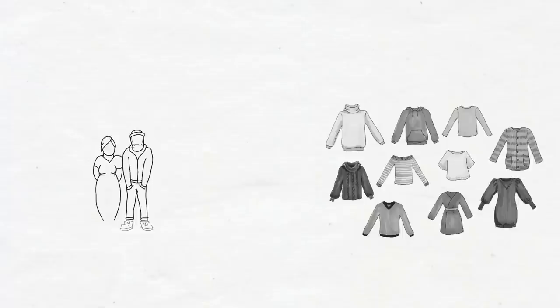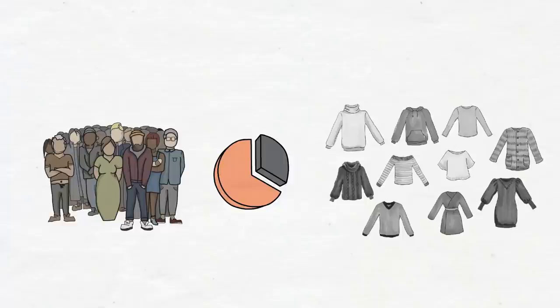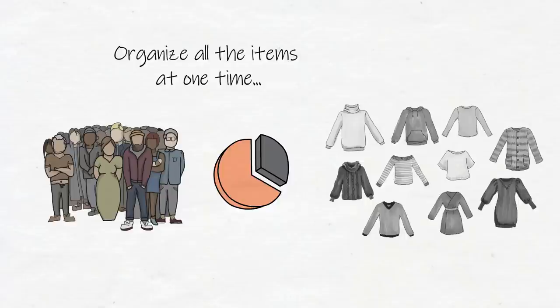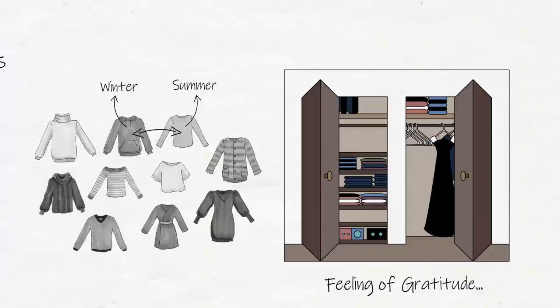Many of Kondo's clients think they have nothing to throw away when they start, but often throw away two-thirds of the items in their closet. The secret is organizing all the items in the closet at one time, because it allows you to compare all the items and create different categories, like summer and winter clothes, then reserve a space in your closet for each category. That way you can stay tidy, because you'll know exactly where an item should go when it enters your closet.